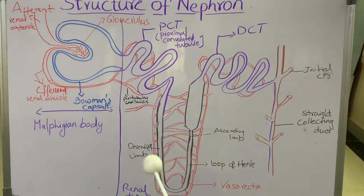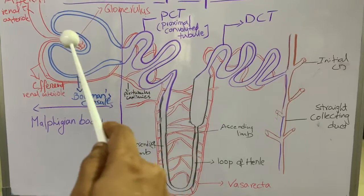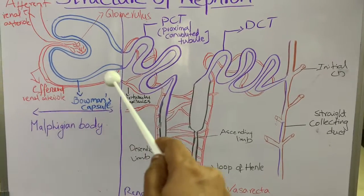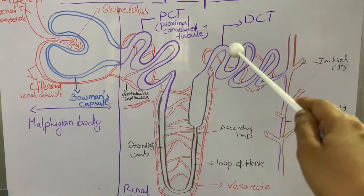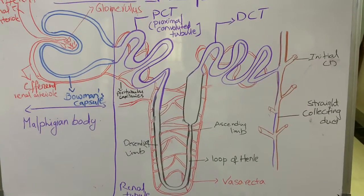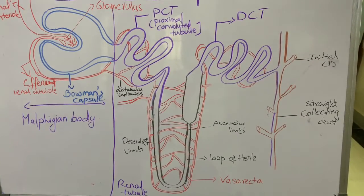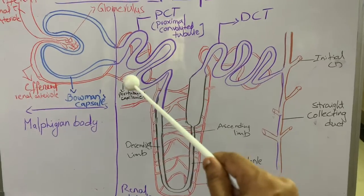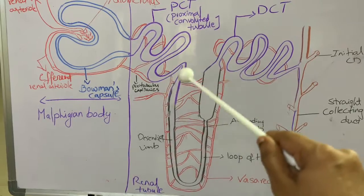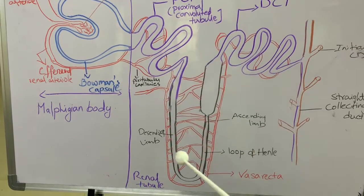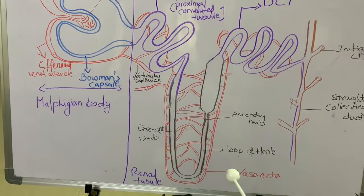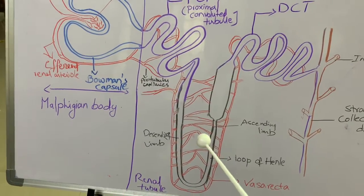The efferent arteriole coming out from the glomerulus forms a network of capillaries known as peritubular capillaries. The peritubular capillaries that surround Henle's Loop are specifically known as the vasa recta.